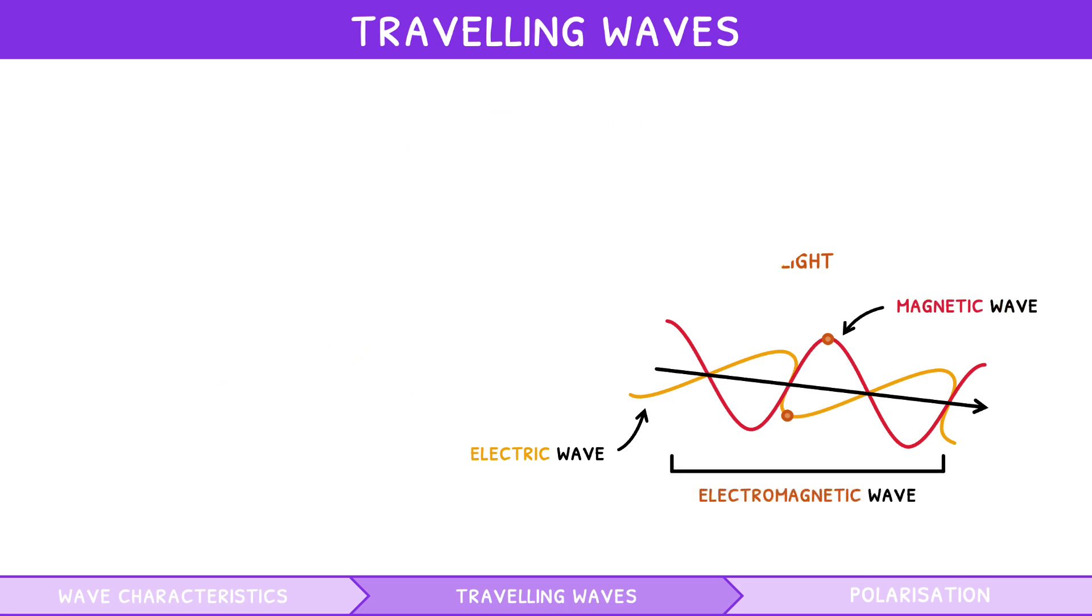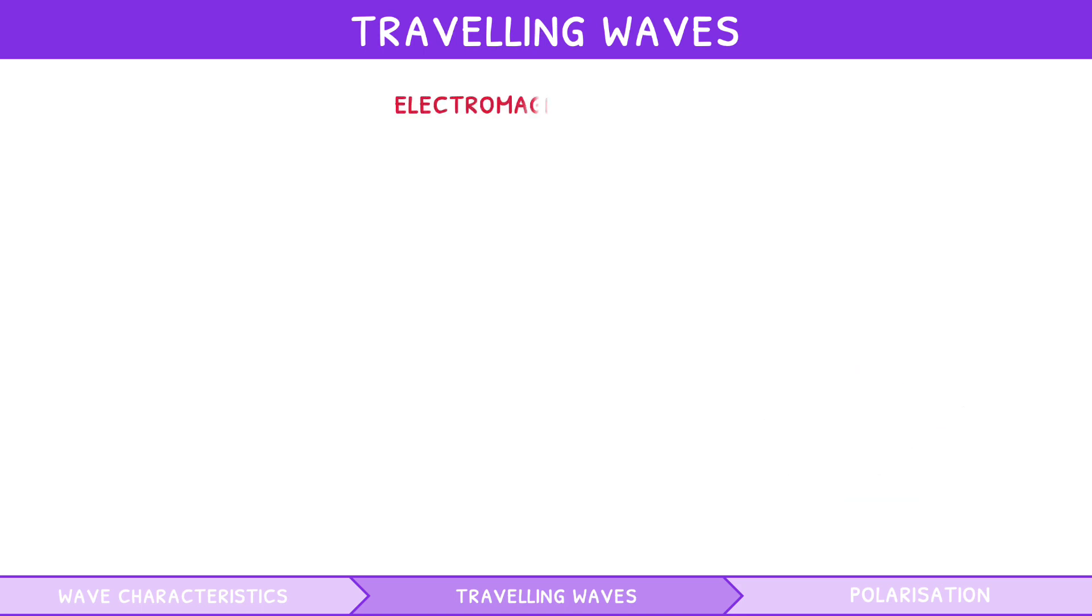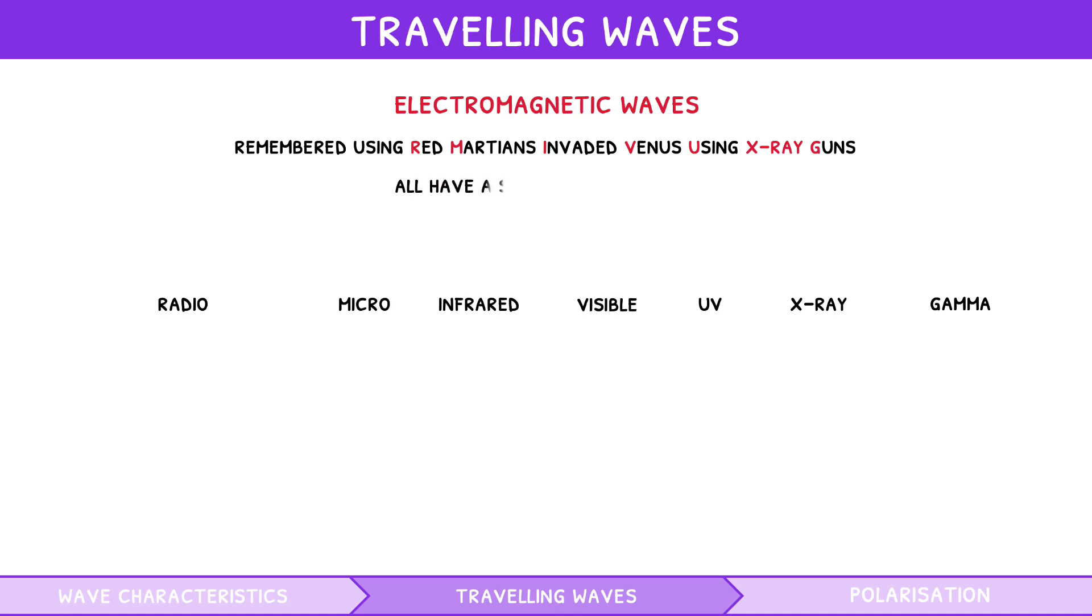For your exam, you need to recall some information on electromagnetic waves. The different types are radio waves, microwaves, infrared radiation, visible light, ultraviolet light, x-rays and gamma radiation. These can be remembered using the mnemonic, red Martians invaded Venus using x-ray guns. All electromagnetic waves travel at a speed of 3 times 10 to the 8 meters per second, and their relation to one another is defined by the electromagnetic spectrum.